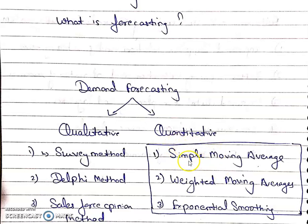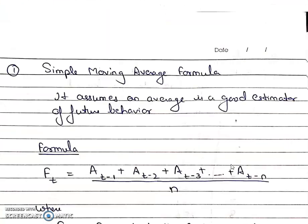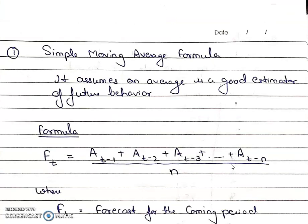In quantitative methods, we have some numeric data and we use statistical tools to calculate or forecast for the next year. The quantitative methods include simple moving average, weighted moving average, exponential smoothing method, and one more extrapolated method. In this video, we are going to discuss only these three methods.